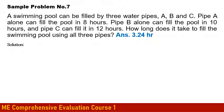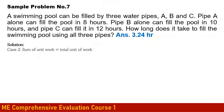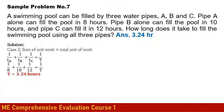A swimming pool can be filled by pipes A, B, and C alone in 8, 10, and 12 hours respectively. Using Case 2: 1/8 + 1/10 + 1/12 = 1/T. Solving, T equals approximately 3.24 hours when all three pipes are used together — reduced from the individual times of 8, 10, and 12 hours.